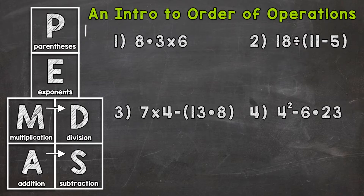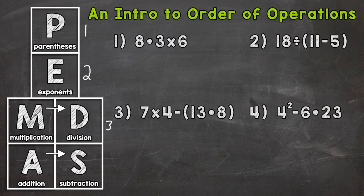Then we have E for exponents — that's level or priority number two. Then we move to level or priority number three, which is multiplication and division. Multiplication and division are both level three, so that arrow in between the M and the D is very important. And then lastly, we have level or priority number four, which is addition and subtraction. Addition and subtraction are both level four, just like multiplication and division are both level three, and they have an arrow in between the A and the S.